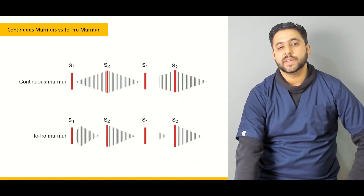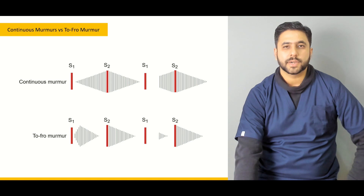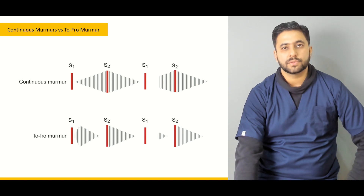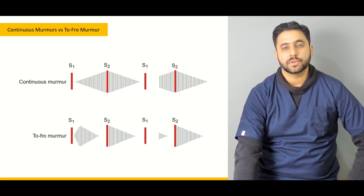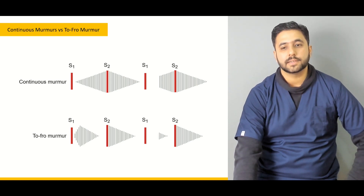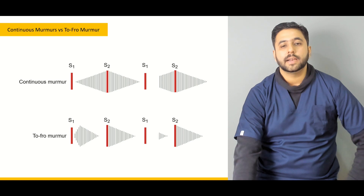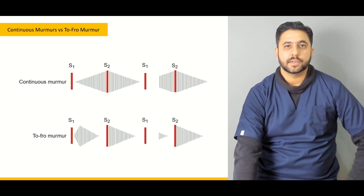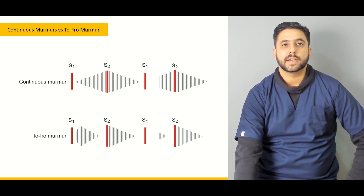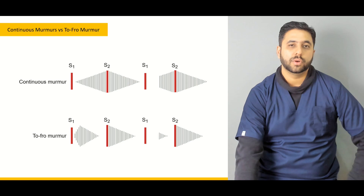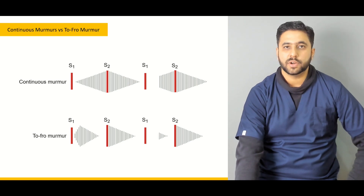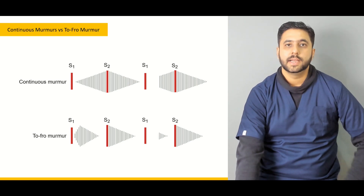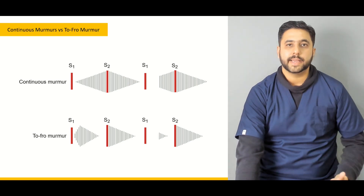Then we are going to discuss some continuous murmurs — what are the important clinical things to consider in this case, and how to differentiate the continuous murmurs from the to-and-fro murmurs occurring in certain patients when there are multiple valvular pathologies occurring simultaneously.